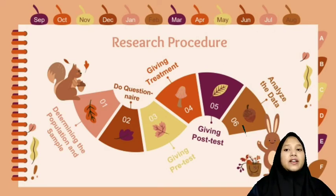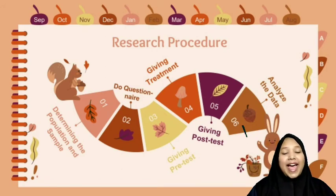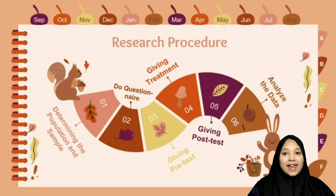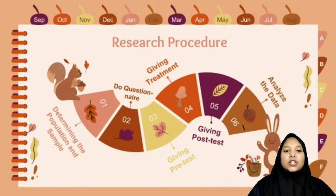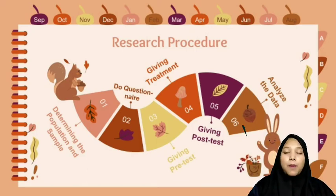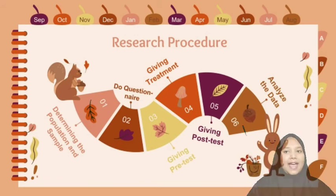Let's move to the research procedure. Firstly, the population is elementary school students, especially the sixth grade as the sample. Second, we conduct a questionnaire for the students and the teachers. Third, we start by giving a pretest as the data that will be analyzed at the end. Fourth, we start giving treatment — that is, using games to teach English vocabulary. After that, we give a post-test as a comparison with the pretest. And the last step is to analyze the data, which will be calculated using SPSS.